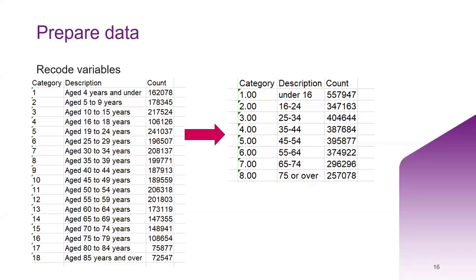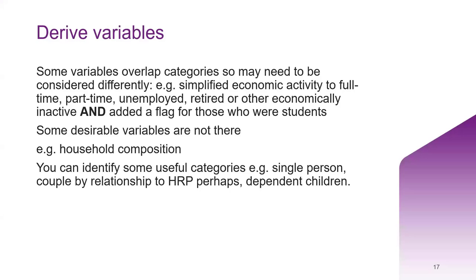Here's an example of recoding. The data comes in five-year age bands. I've decided I want a pattern more like under-16s, and then more or less 10-year age bands, apart from 16 to 24. You may also need to derive variables, and there are some overlaps — for example, social class as defined by occupational social class and economic activity will have overlaps in the categories that you may need to think about combining.